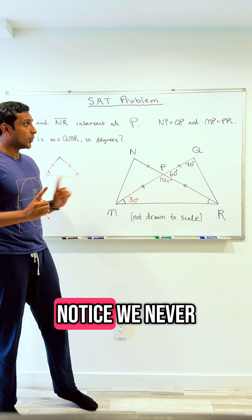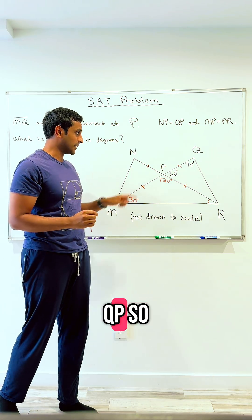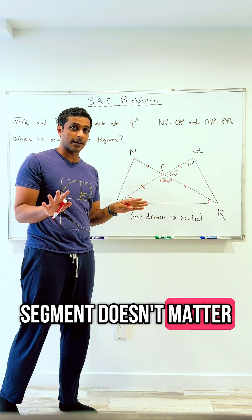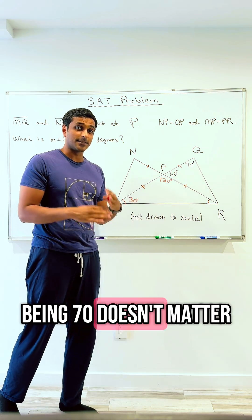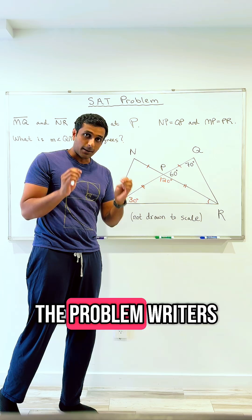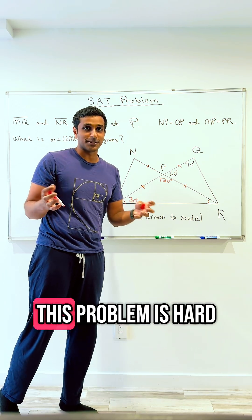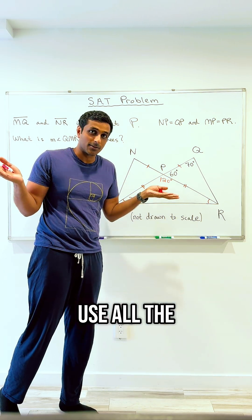By the way, notice we never used this fact that NP is equal to QP. So this segment being equal to that segment doesn't matter, and that angle being 70 degrees, it doesn't matter. So the problem writers are trying to trick you, and maybe that's why this problem is hard, is that you don't even need to use all the information for the problem.